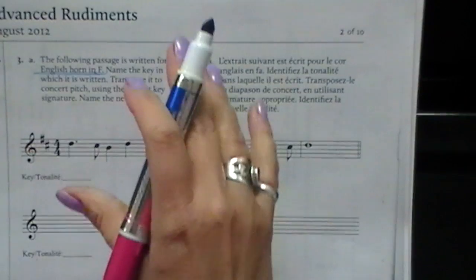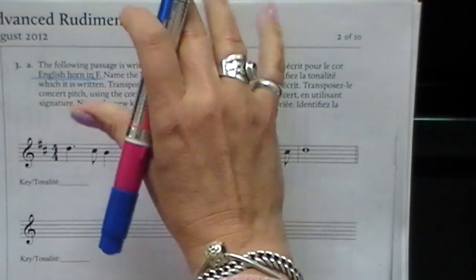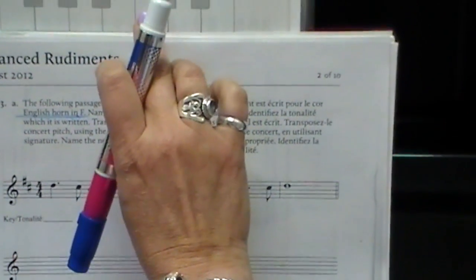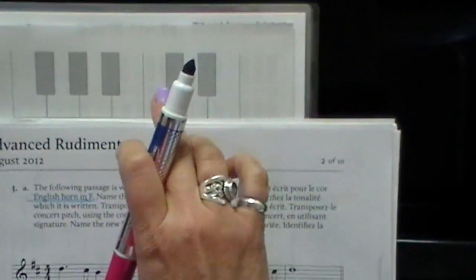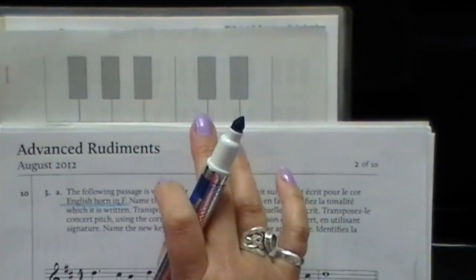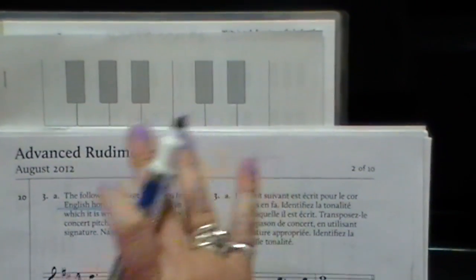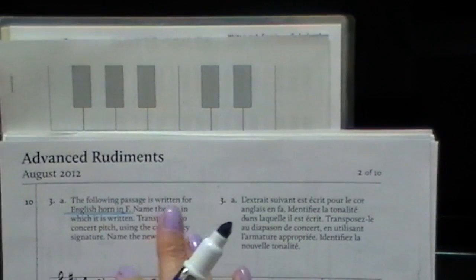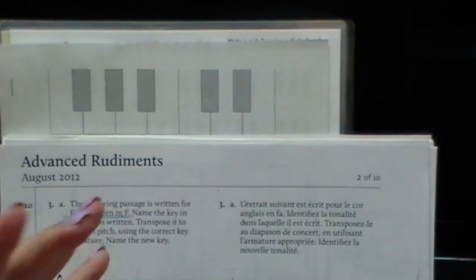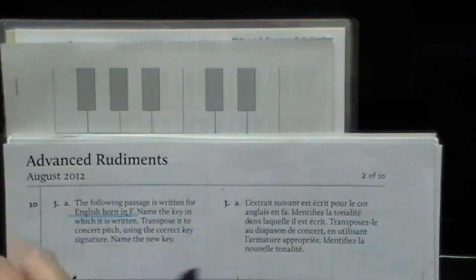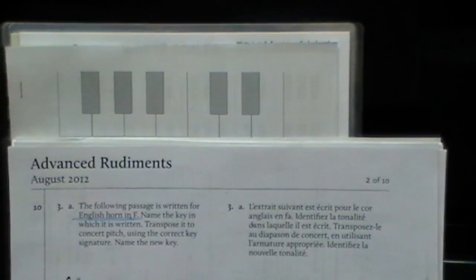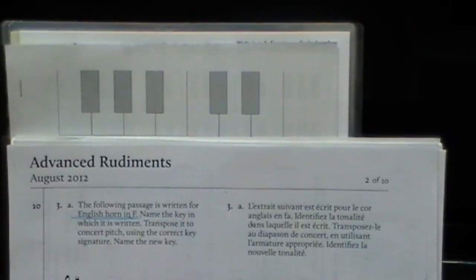A concert pitch instrument would be like the piano — it's usually an instrument that's done in C. So C instruments would be the harp, the organ, the viola, the violin. They don't have to be transposed, but we have some instruments that when they're played, they sound lower than what is written.